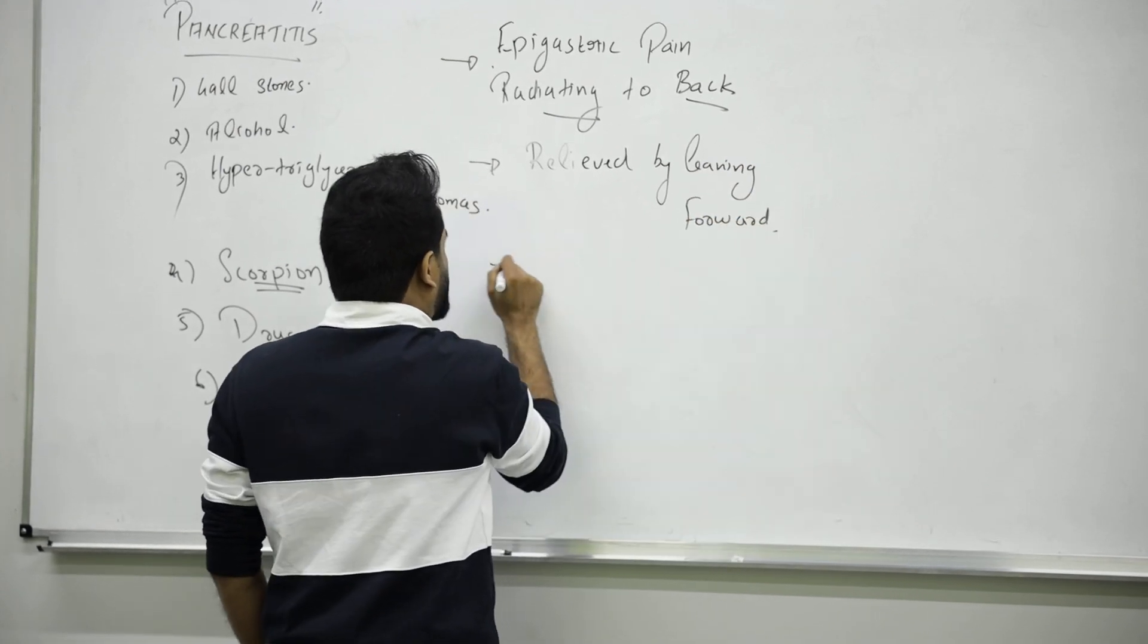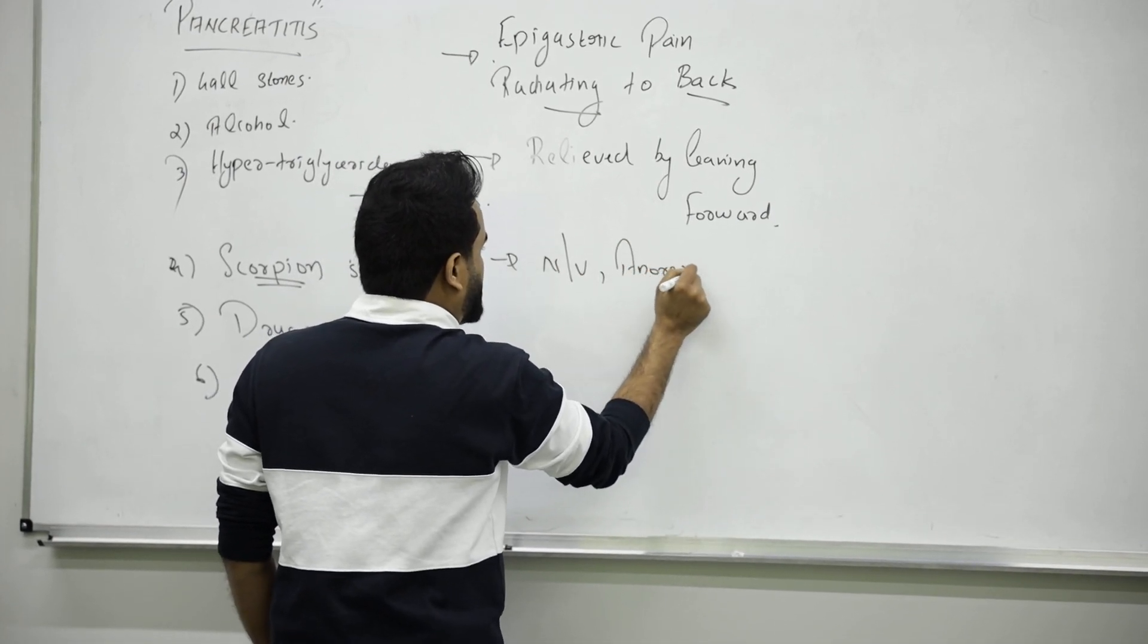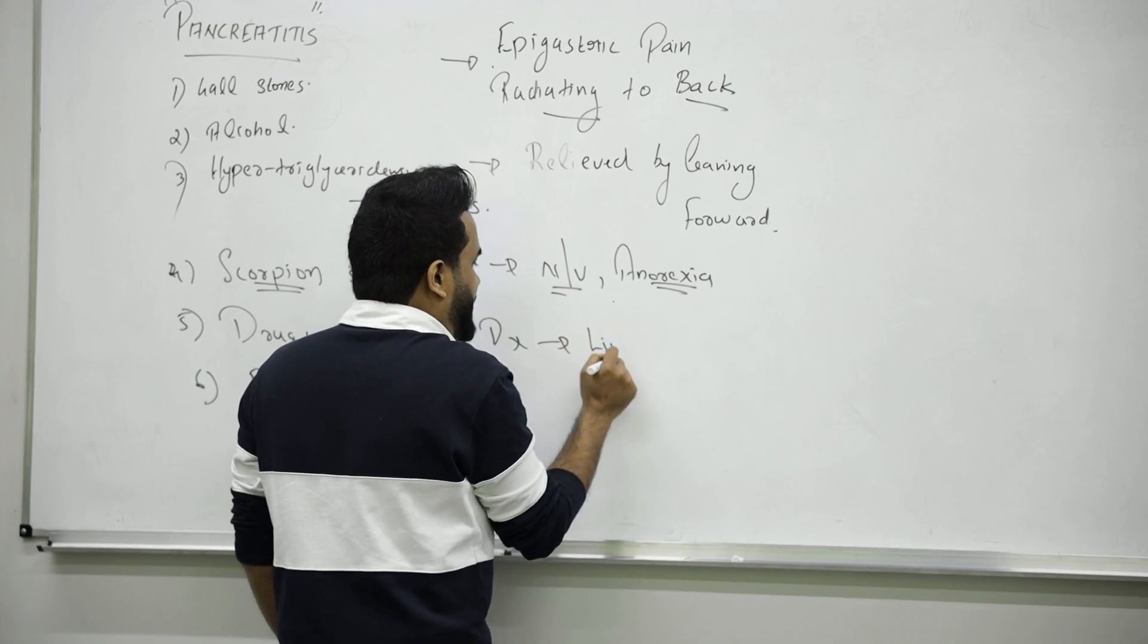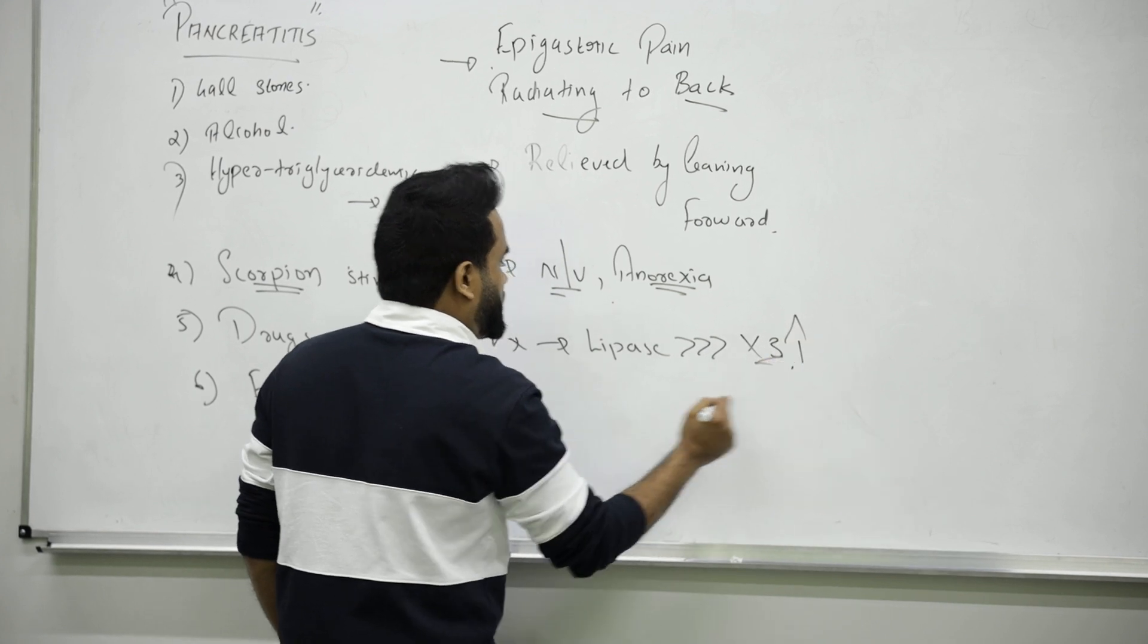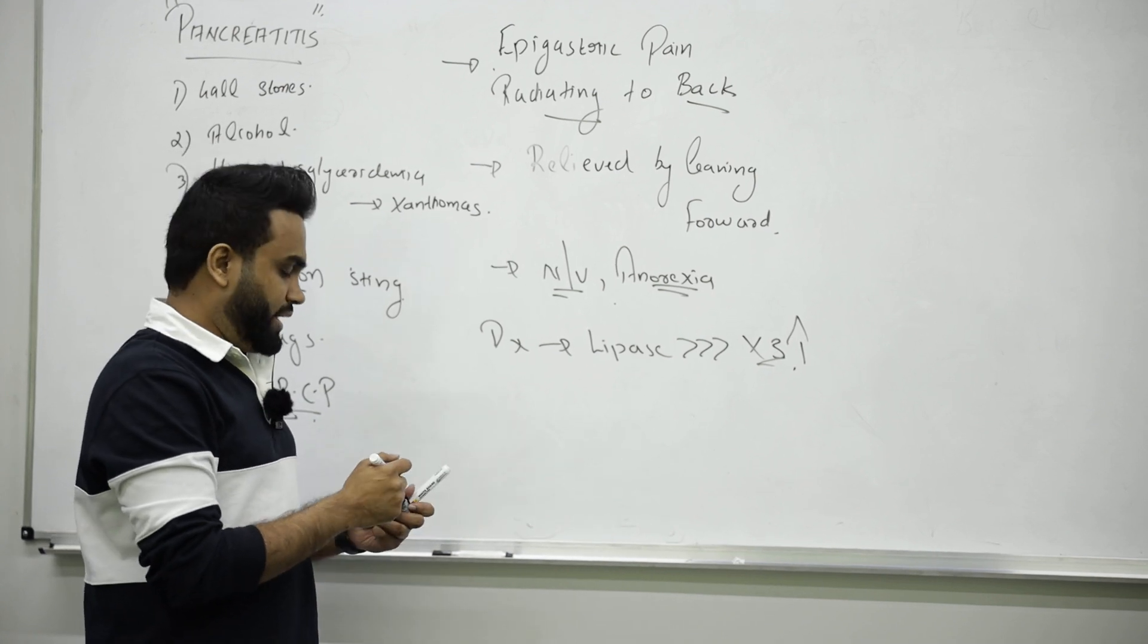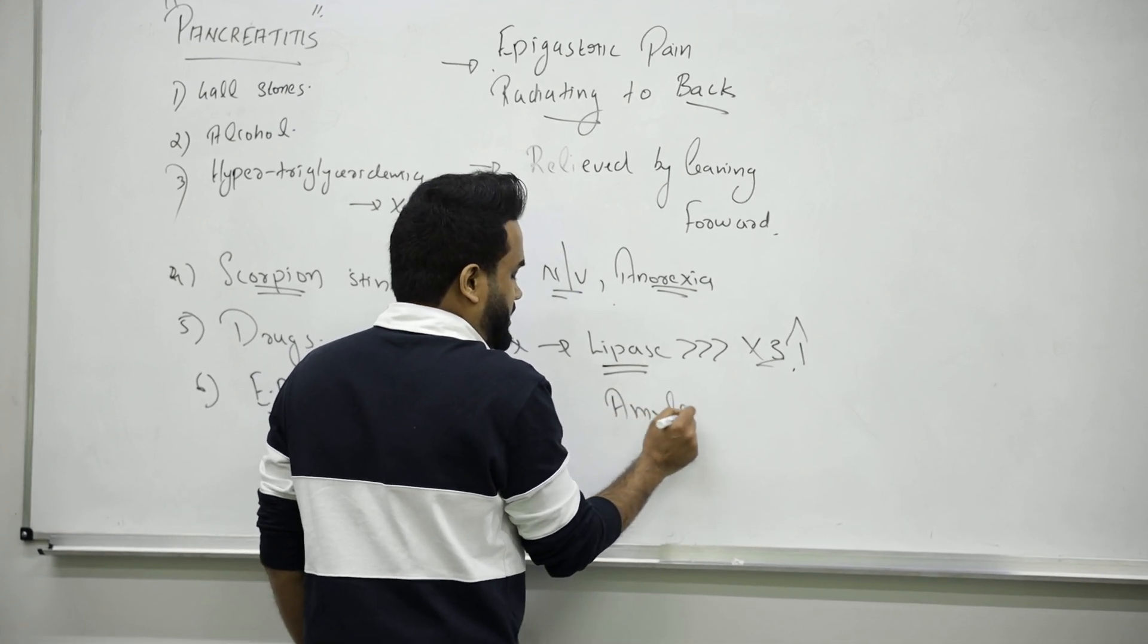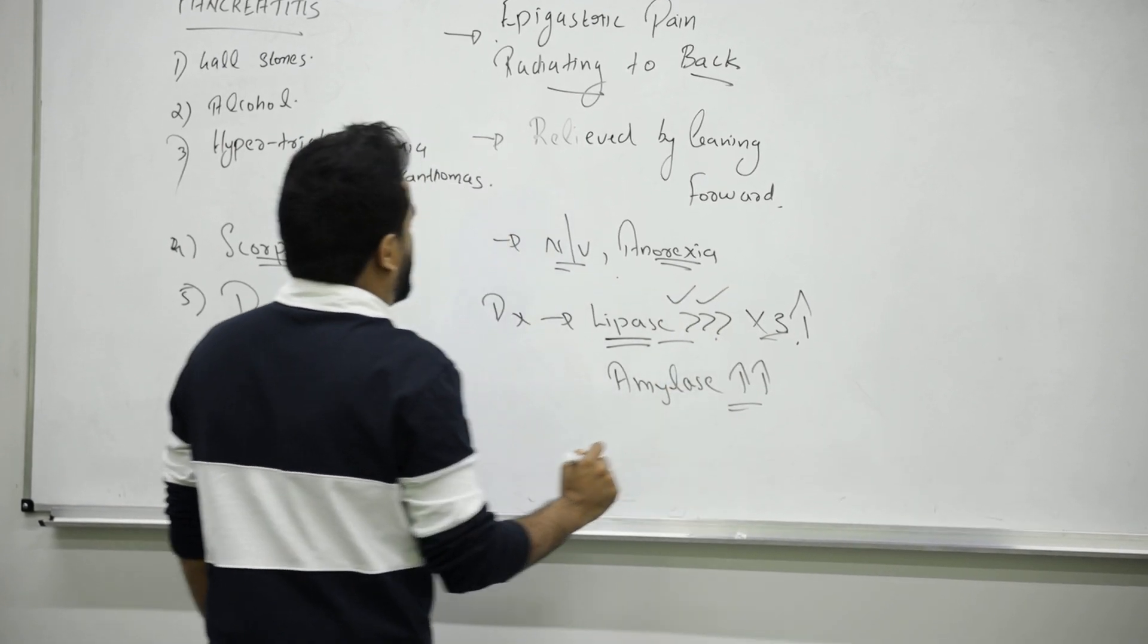Patient will have symptoms like nausea, vomiting, or complaining of anorexia. For diagnosing, we can do blood tests. We will see lipases three times more than the normal level. That is the best marker for pancreatitis. Amylase also will be high, but the best marker will be lipase.